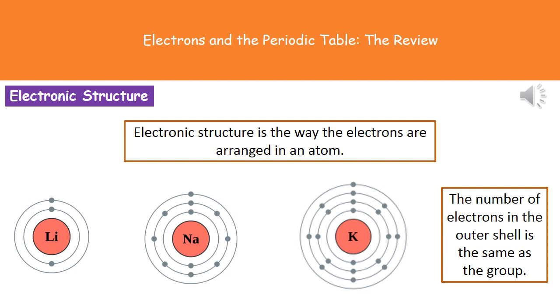Now the electronic structure then is the way that the electrons are arranged in the atom. So when we have a look at three of them here, we've got lithium, sodium and potassium, which are all found in group 1 of the periodic table, the alkali metals. So if we look at their electronic structures, we can see lithium has one electron in its outer shell, sodium has one electron in the outer shell, and potassium has one electron in its outer shell.